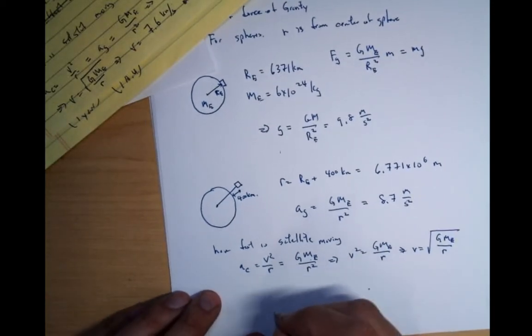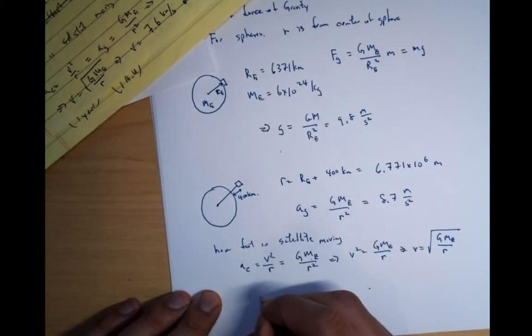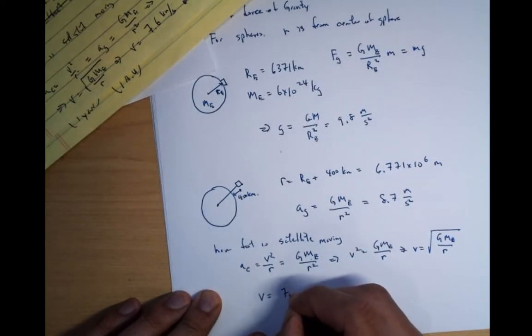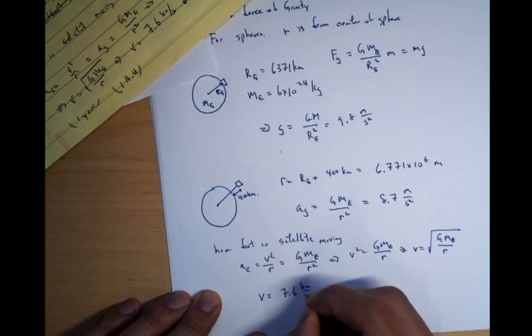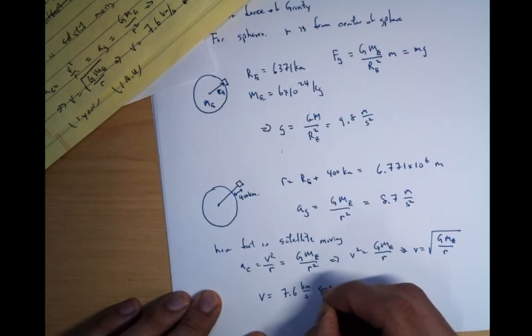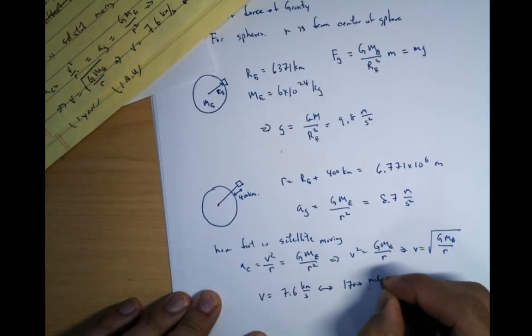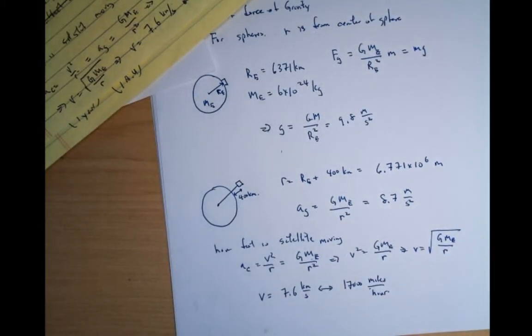Running out of time, I'll just write down what the answer is. V is going to be equal to 7.6 kilometers per second, which roughly translates to 70,000 miles per hour. And that's it for gravity.